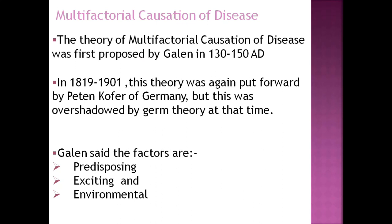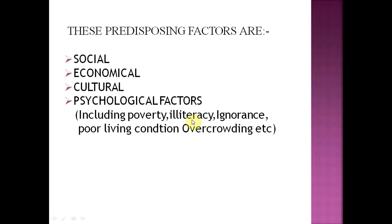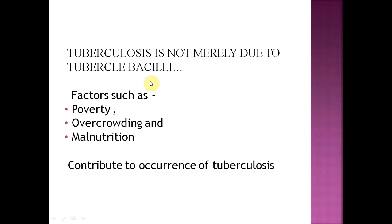This led to the next concept: multifactorial causation of disease, meaning disease is caused by many factors. It was first introduced by Galen around 130 AD, and Pettenkofer of Germany also introduced this theory in the 19th century, but it was overshadowed by germ theory during the golden era of bacteriology. Social, economic, cultural, and psychological factors all have to be present for a disease to be produced — especially chronic and lifestyle diseases. Factors like poverty, illiteracy, ignorance, poor living conditions, and overcrowding all contribute. Tuberculosis is not just due to bacteria — it is also due to poverty, overcrowding, and malnutrition.